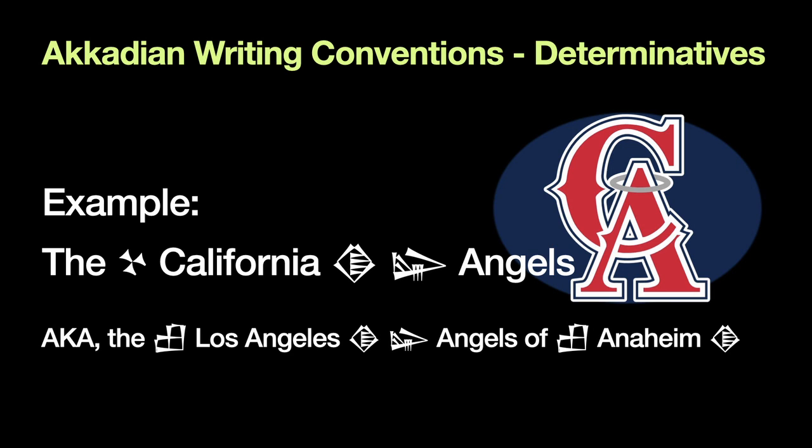So if we were to look at the California Angels, notice how I have the place California with that mountainous determinative in front of it, and the key following California, capping off the name. Then I have this other symbol in front of 'angels' — that's a symbol for men, and it works for clans, tribes, things like that. Since they're a team, I'm going to use that determinative in front of 'angels.' And for that exhaustive name, the Los Angeles Angels of Anaheim, you can see the two different city determinatives being used, capped with the key determinatives at the end. That's the Uru city sign in front of both Los Angeles and Anaheim, and the Lu₂ symbol in front of the team itself.